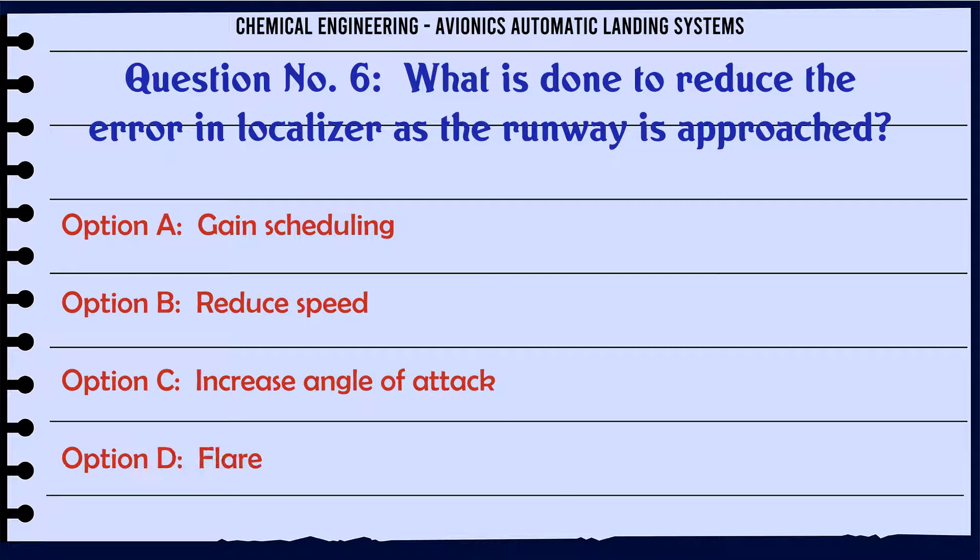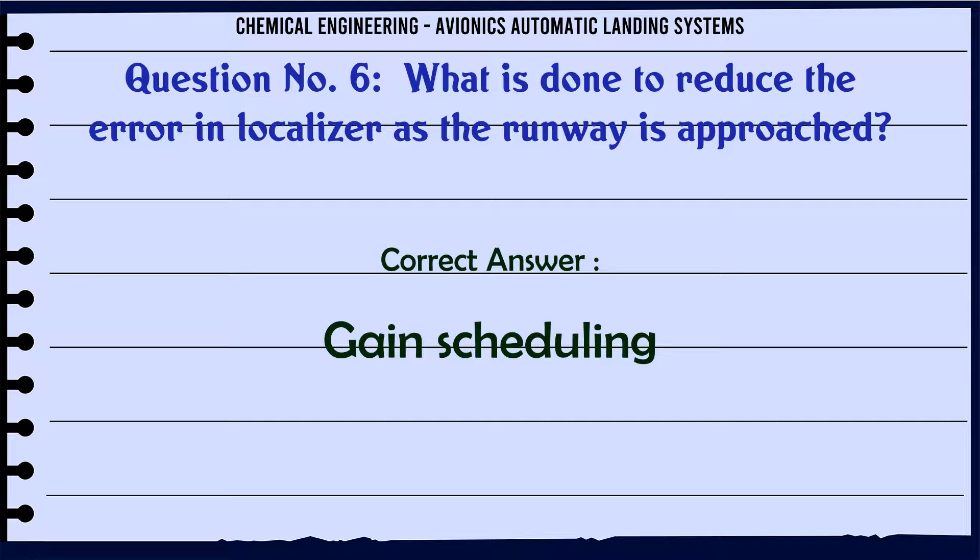What is done to reduce the error in localizer as the runway is approached? A. Gain scheduling. B. Reduce speed. C. Increase angle of attack. D. Flare. The correct answer is Gain scheduling.